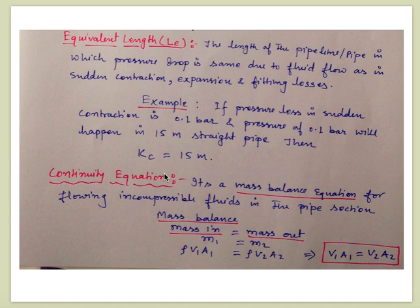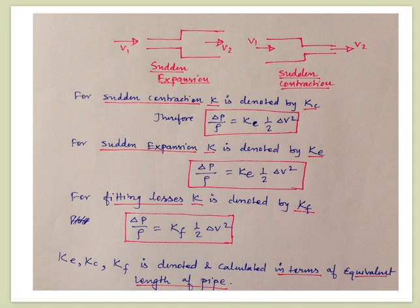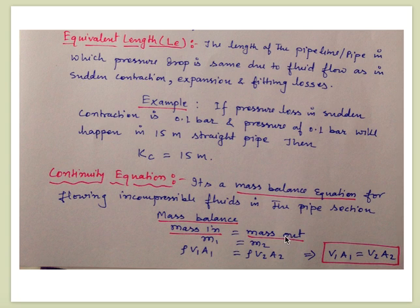One more equation used alongside Bernoulli equation is the continuity equation, which is the mass balance equation for the same pipe section. Taking mass balance: mass in equals mass out, so M1 = M2 — since we assume no accumulation of mass inside the pipe. Mass is expressed as ρ·V·A (density times velocity times area), giving ρ·V1·A1 at point 1 and ρ·V2·A2 at point 2.